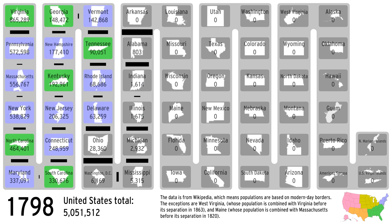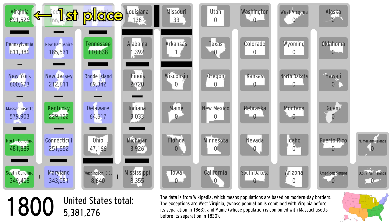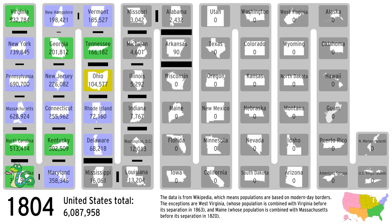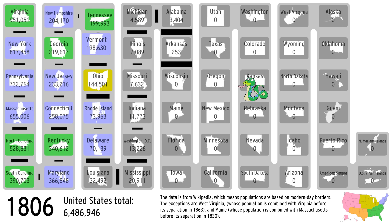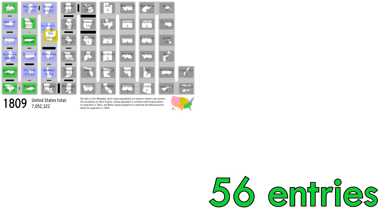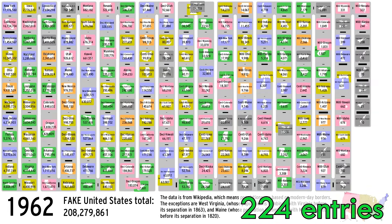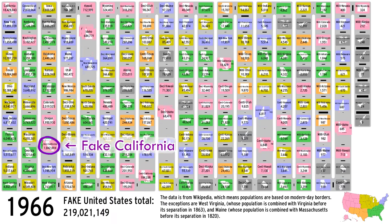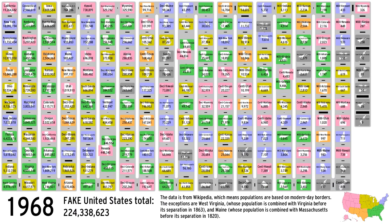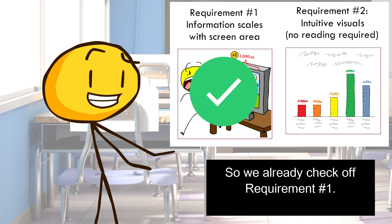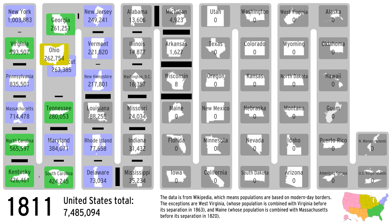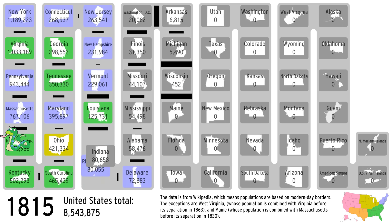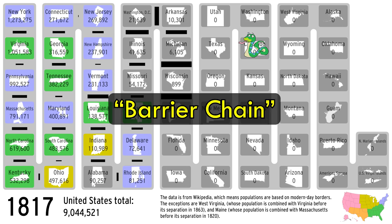So how does the barrier chain work? The states are ranked by population, with first place in the upper left, second being below first, third below second, and so on, forming a snaking path where every two neighbors are next to each other. It's similar to the grid of numbers in that if you were to double the screen's side length, you'd have room for four times the elements. By the way, the way I created 150 fake states was by taking every real state and creating a fake version with one-tenth, one-hundredth, and one-thousandth the population. So we already check off requirement number one.